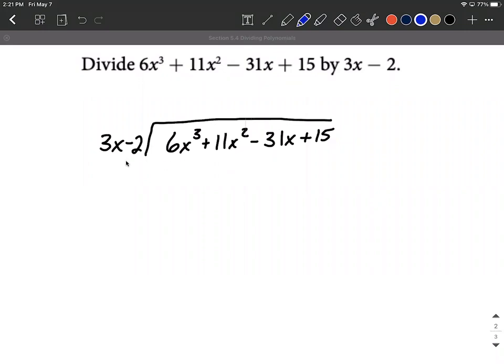All right, from here, let's start out and focus on these first terms. So you focus on the 3x and you focus on the 6x cubed. And you think to yourself, 3x multiplied by what is going to make exactly 6x cubed. So 3 times 2 will make the 6 and x times x squared is going to make the x cubed. So that goes up here at the top in our quotient.